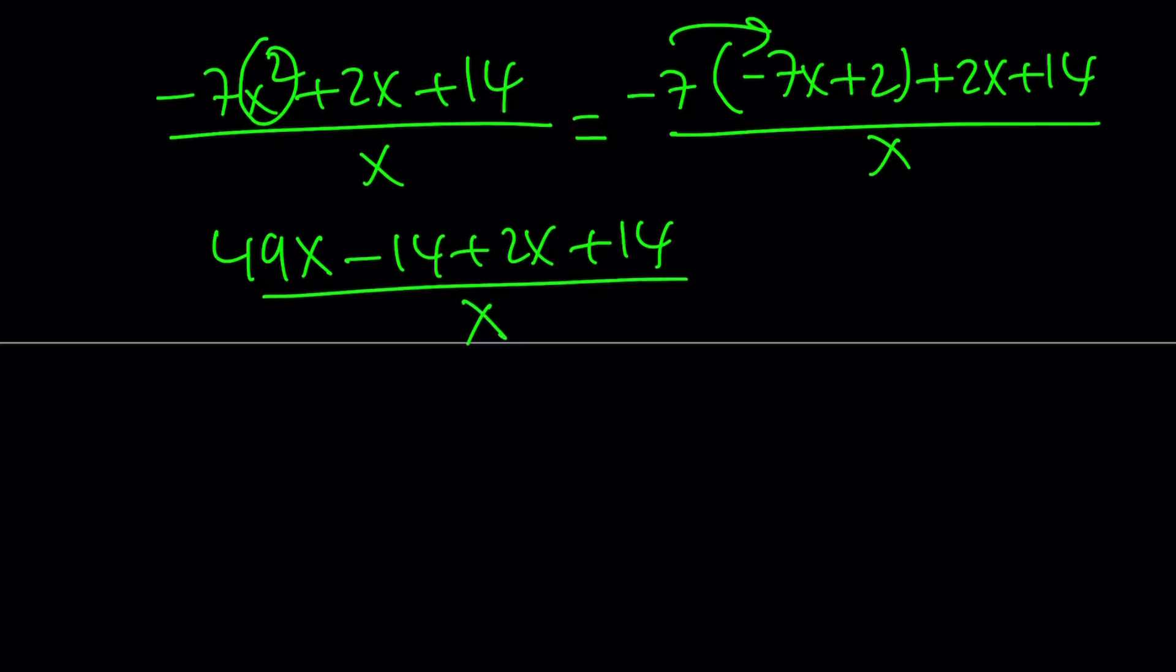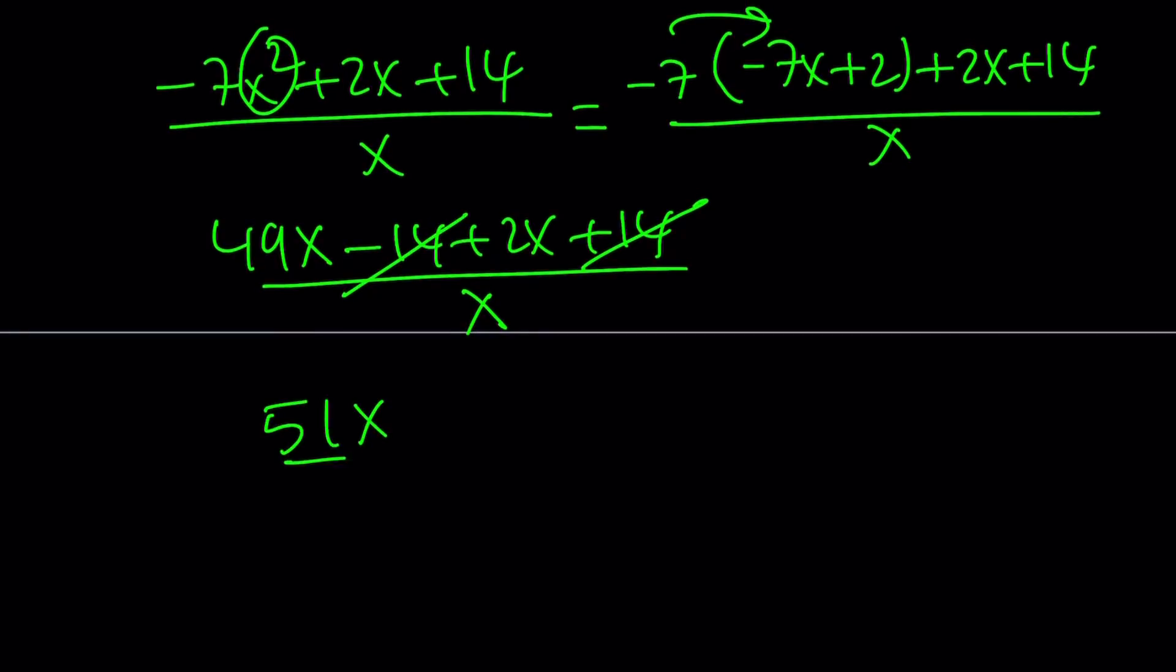Last time, we had the radicals cancel out. This time, x's are going to cancel out. And, well, actually, I should say numbers are going to cancel out, not the x's. Anyways, so from here, we get 51x divided by x. And finally, x's cancel out. And the answer is going to be 51.